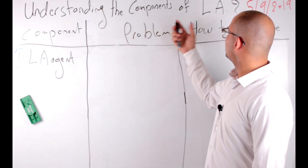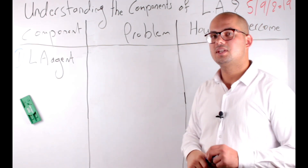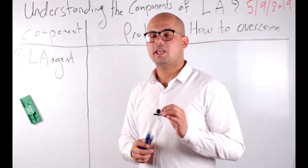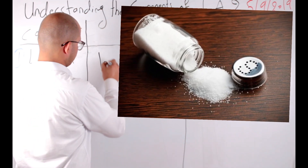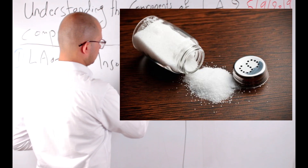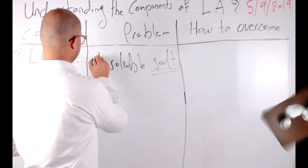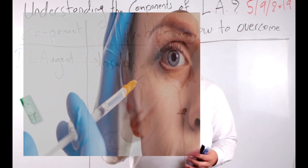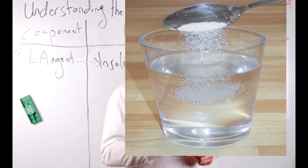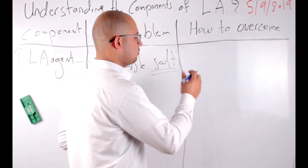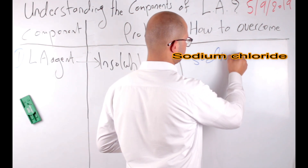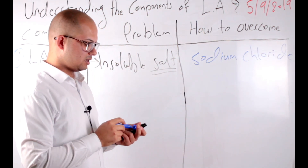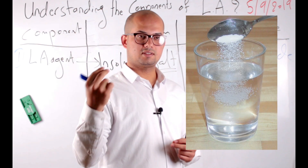To understand the components of local anesthesia, let's go quickly over the chemistry of local anesthetics. In nature, local anesthetics are an insoluble salt — and because it is a salt, we cannot inject it intra-orally. We have to provide them in a solution that is injectable, so we dissolve this salt in a solution called sodium chloride.